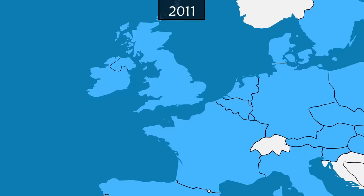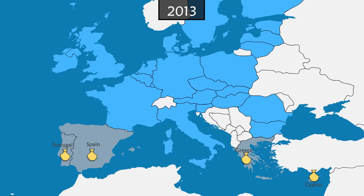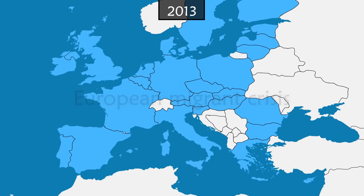Subsequently, Portugal, Greece a second time, Spain and then Cyprus obtain financial aid from the Eurozone, while almost everywhere on the continent, austerity plans are put into place.